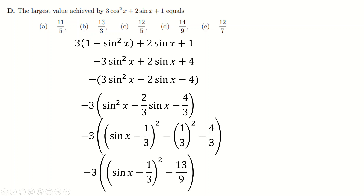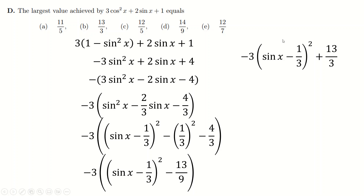Completing the square: take the object that squares, subtract half of the coefficient — that's minus a third — all squared. Tidy up and expand the minus three again. Since something squared is always positive but is always multiplied by a negative, to maximize the expression you make the squared term zero. That gives the largest value as 13 over 3. It occurs when sine of x equals a third, but they weren't asking for that.